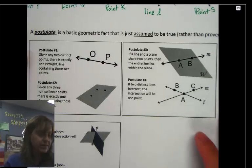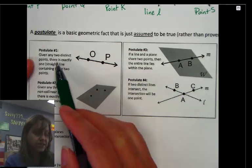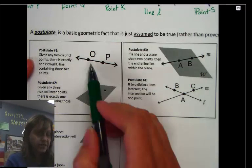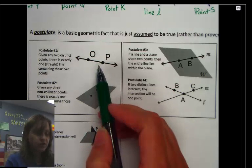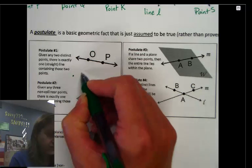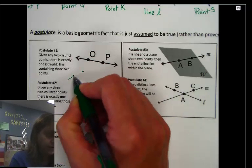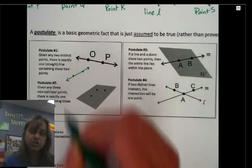So postulate number one says that if we're given any two points, there's exactly one straight line containing those two points. For example, O and P right here. O and P on the page, there's only one line I could draw through them. If I drew any two points, how many lines can I draw through them? Exactly one. That's our first postulate.